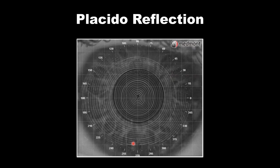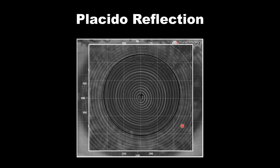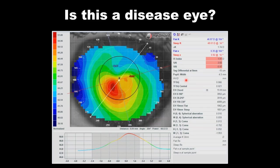Looking at the placido reflections: where the cornea is steepest, the rings appear thinnest and closest together; where we hit flatter cornea, the rings may widen out and stretch between rings. Based on the placido reflection, we're looking at the true shape of the eye. Is this a diseased eye or just a very peaked apex, slightly inferior of center? Let's look at the scale range: this eye has a flattest curvature of 39 diopters, steepest curvature of almost 52 — around 11 to 12 diopters of distribution. That's above our threshold of 10 diopters, indicating an irregular cornea.